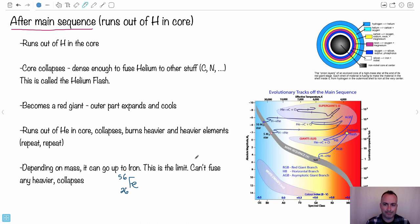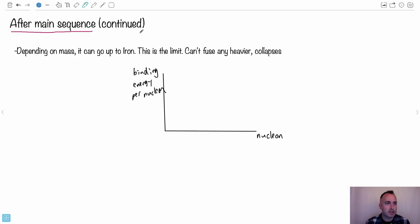The interesting part happens with iron. After the main sequence, depending on the mass, it can go up to iron. It can't fuse any heavier. Let's look at this graph of binding energy per nucleon. Do you remember this binding energy per nucleon graph? It goes kind of like this. The peak is iron 56 here. That's the peak. What we say is that a nuclear process will happen on its own, naturally, if you go up in this binding energy per nucleon. Binding energy is the energy that's released when you make a new element.